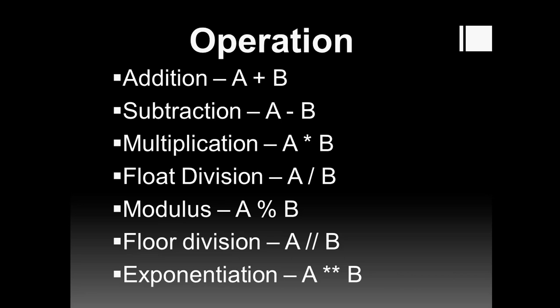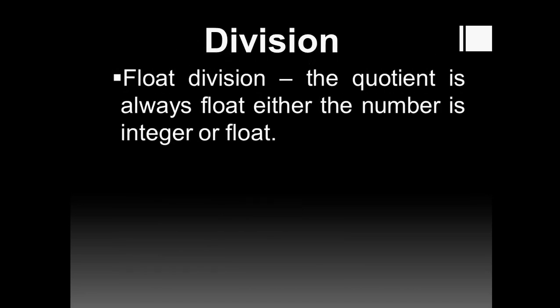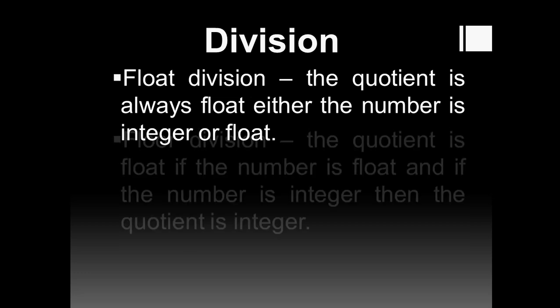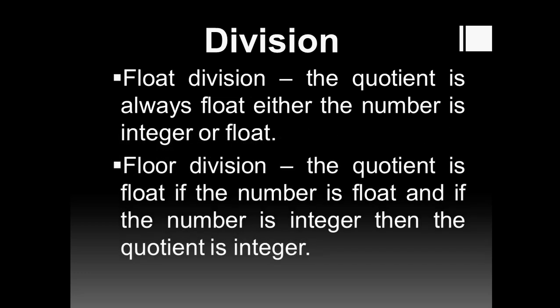After division — in float division, the quotient is always float regardless of whether the numbers are integer or float. In floor division, if the number is integer then the quotient is integer, and if the number is float then the quotient is also float.